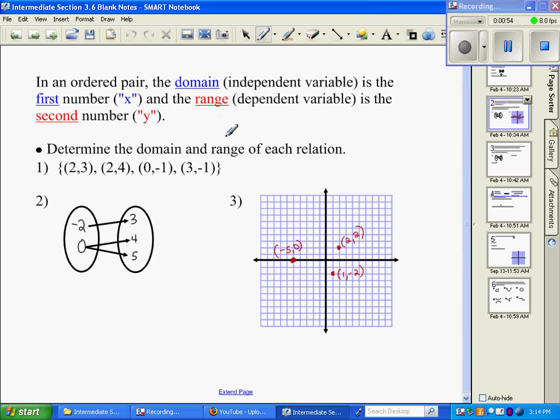First thing we're going to do is determine the domain and range of each function. In number 1, we're looking at the relation with the ordered pairs 2, 3, 2, 4, 0, negative 1, and 3, negative 1. To name the domain, we want to name all the first coordinates, which we also know as the X values. Because positive 2 is twice, I don't have to write the multiples. I just need to represent one of each, and that's two brackets. The range is going to be our Y values, or our second coordinates. That's going to be a 3, a 4, a negative 1, and negative 1 again, so I don't have to repeat it.